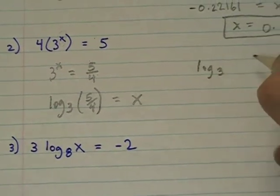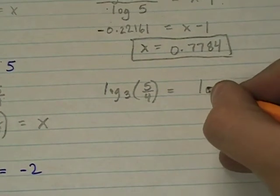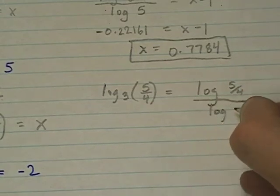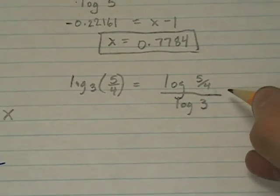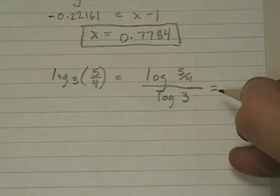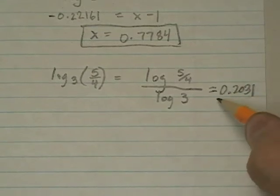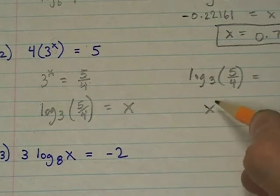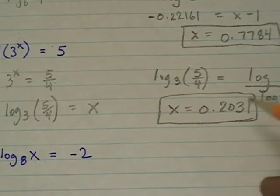Log 3 of 5 fourths is going to equal log of 5 fourths divided by log of 3. And if I type that in my calculator, log of 5 fourths divided by log of 3, I get 0.2031. And since x equals this, what do you get? You get x equals 0.2031 to four decimal places.